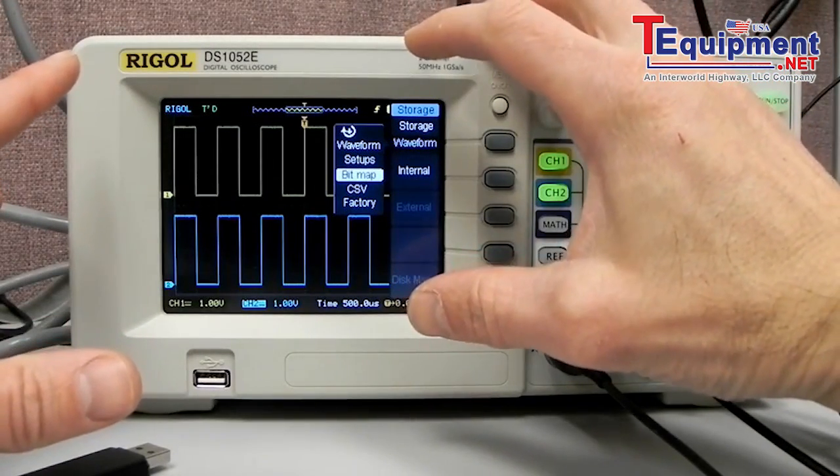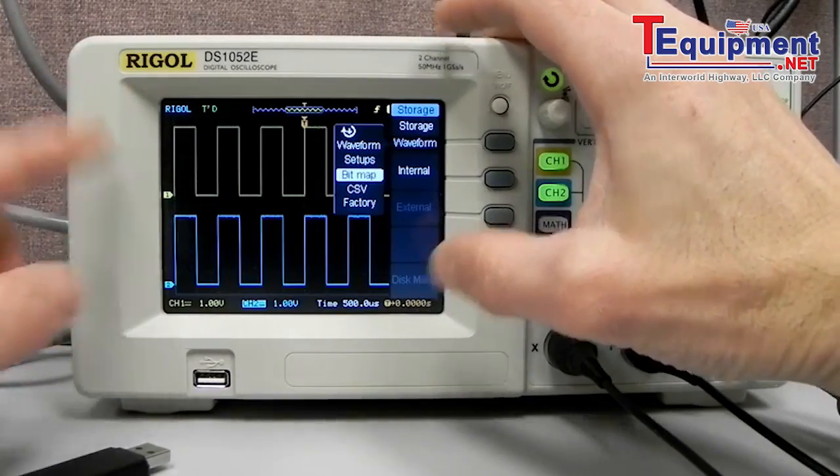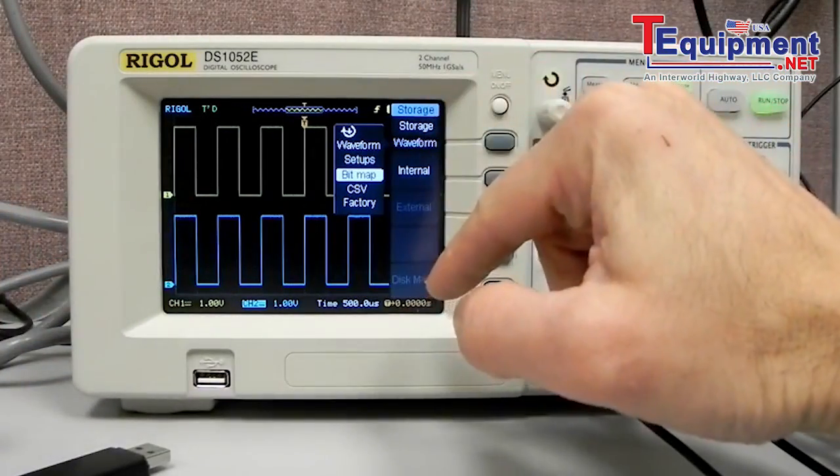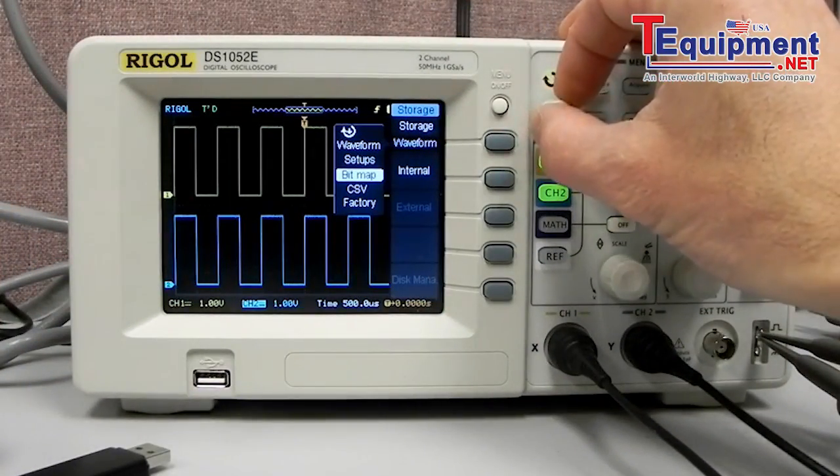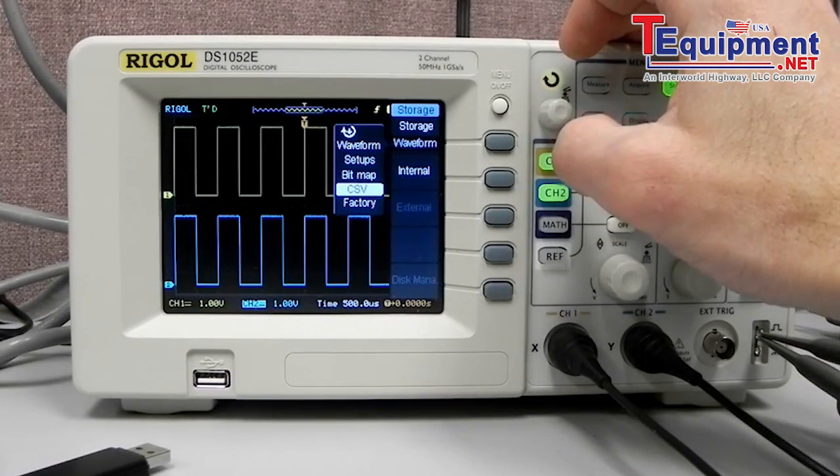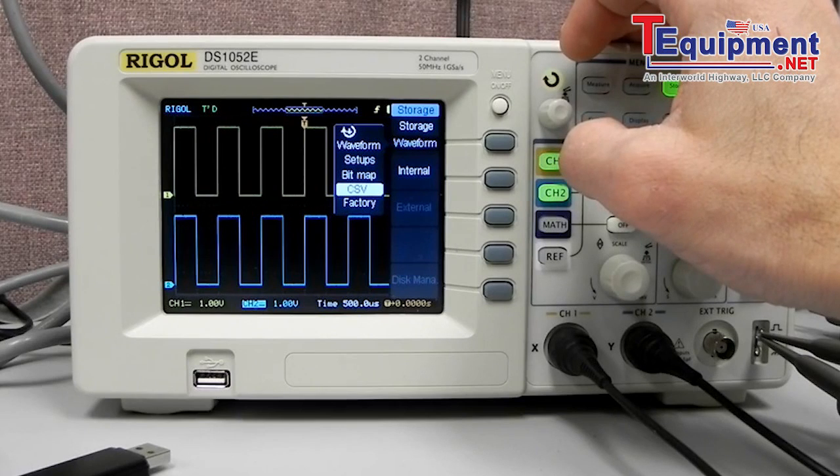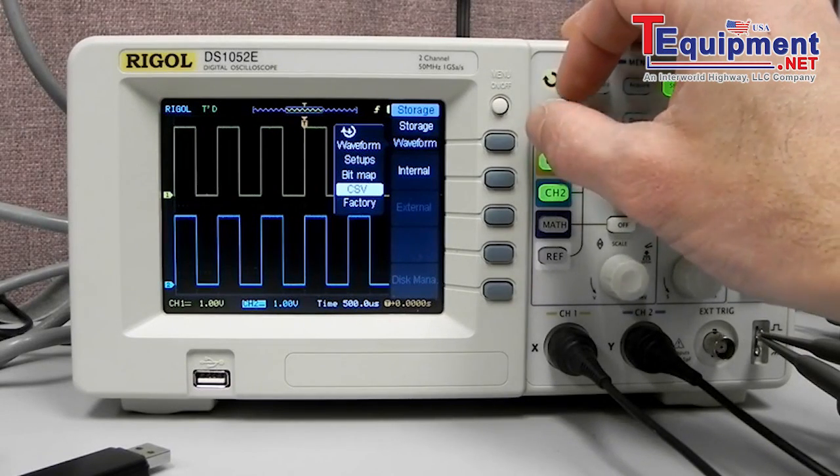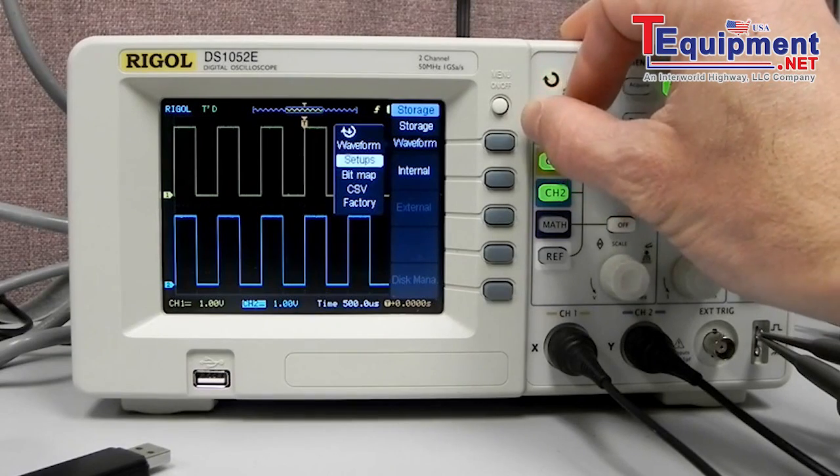Bitmap is going to be a screenshot of the display so it's going to have all of the information that's displayed. It would have the menu if we wanted that information. CSV is going to be comma delimited so we could use that in Excel or other spreadsheet to do graphing and other analysis.